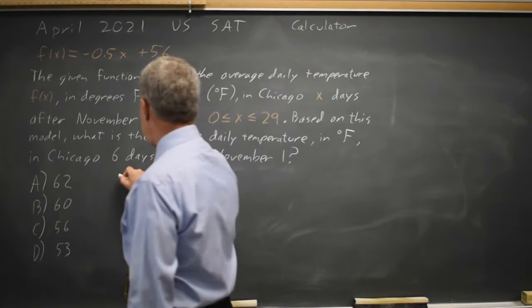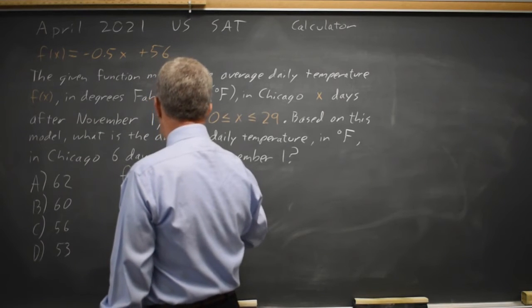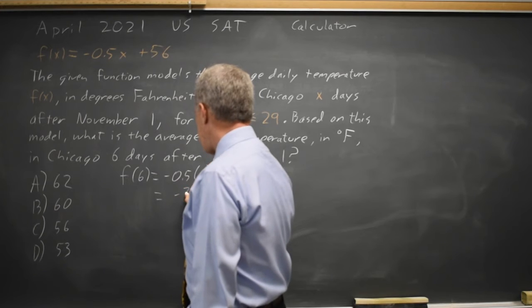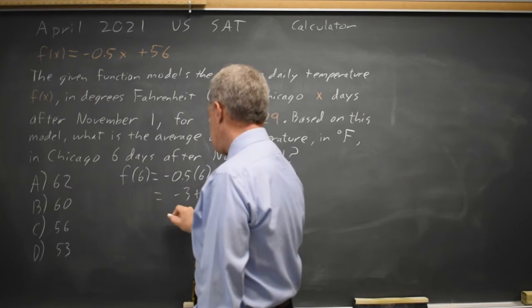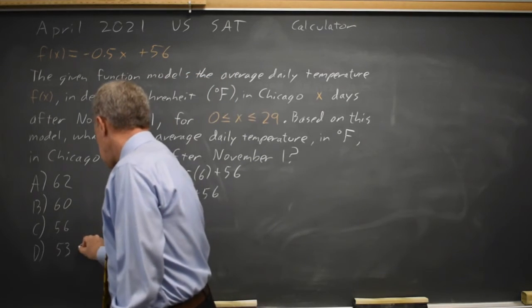So f of 6 equals negative 0.5 times 6 plus 56. That is negative 3 plus 56, which is 53 degrees Fahrenheit. Choice D.